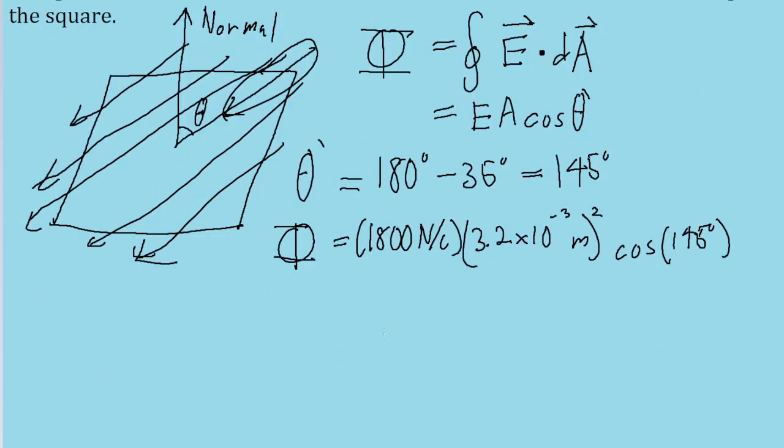Putting this into a calculator, we find an electric flux of -1.5 × 10^-2 newton meters squared per coulomb. That is the answer.